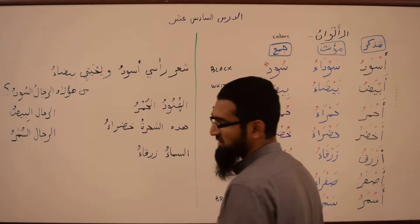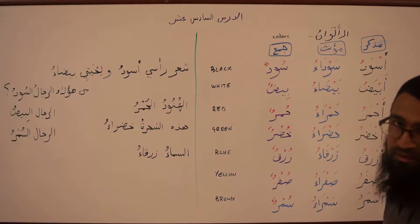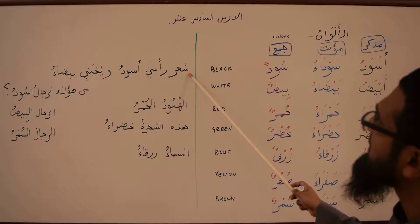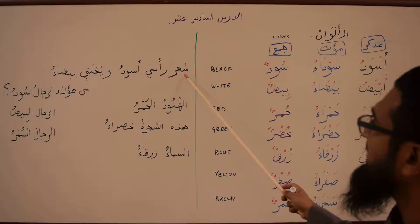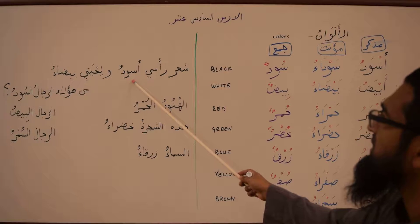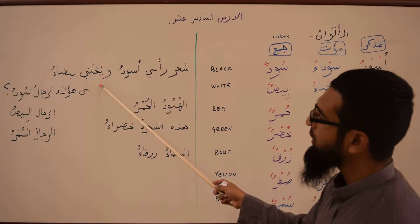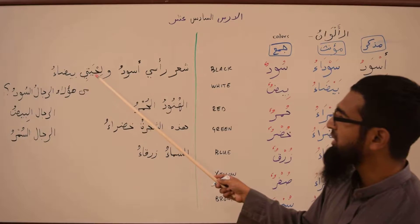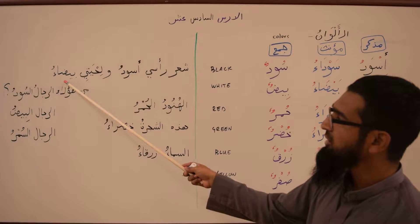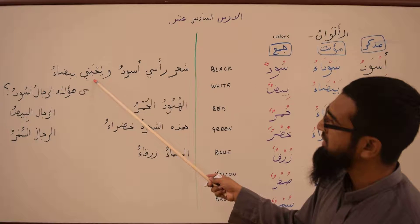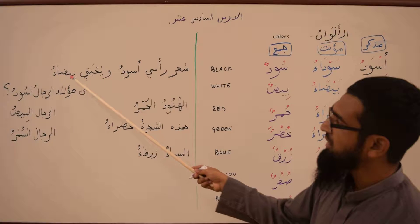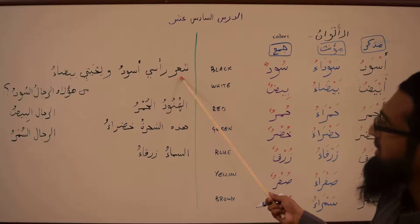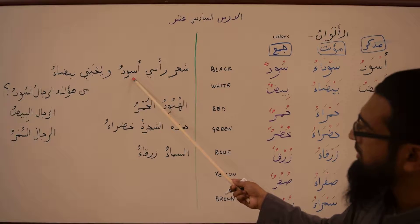So just some sentences and words that you may need to know. We have some ta'liqat, a bit of notes. Sha'ar rasi aswad — the hair of my head is black. Wa lihyati bayda'u — and my beard is white. Because lihya is muanath, we use bayda'u. Lihya is the mubtada and bayda'u is the khabar. Sha'ar is the mubtada and aswad is the khabar.